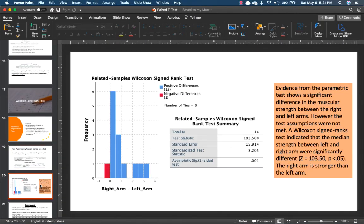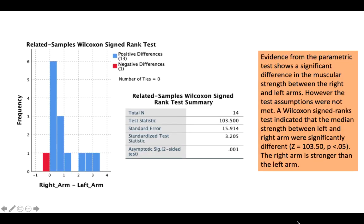How do we report it? Evidence from the parametric test shows a significant difference in muscular strength between the right and left arm, but the test assumptions were not met. A Wilcoxon signed-rank test indicated that the median strength between the left and right arm was significantly different, with a z-score of 1.03, p < 0.05. The right arm seems to be stronger than the left arm. For non-parametric tests, we use median instead of mean because medians are not badly affected by outliers.